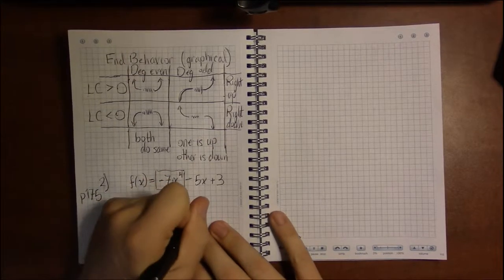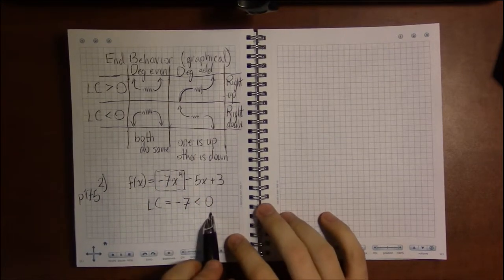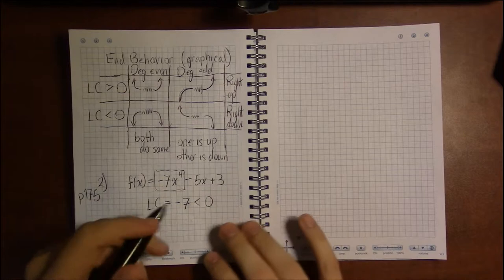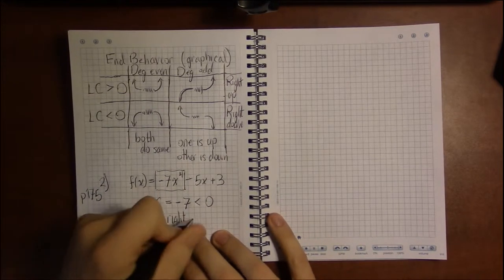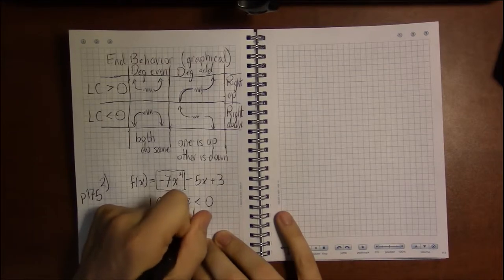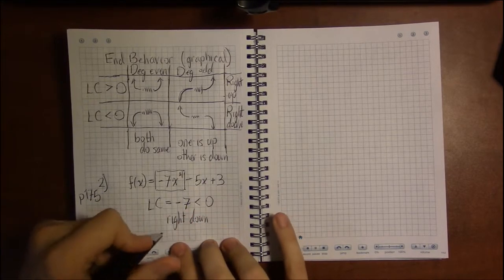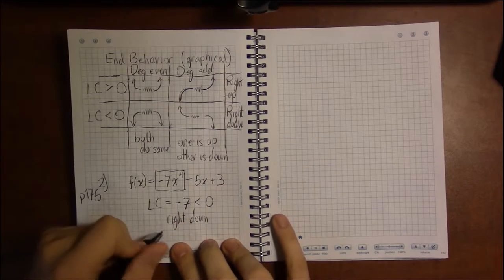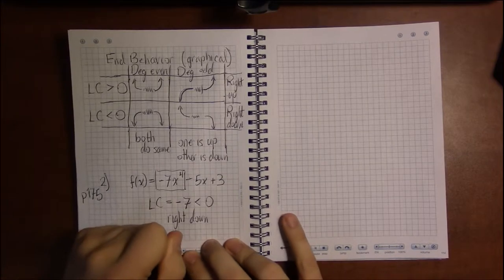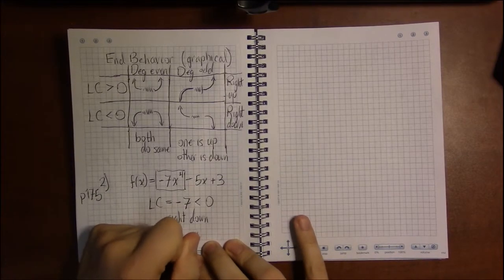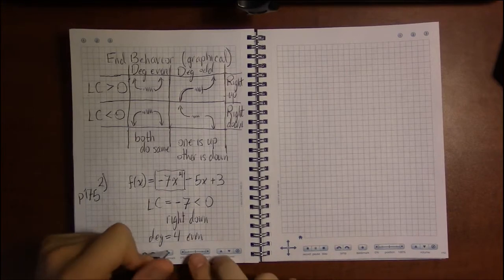So our leading coefficient is -7, and -7 is negative, so it's less than 0. And less than 0 means the right end goes down. And then the degree is the exponent, so our degree being 4 is even, so the left and right do the same.